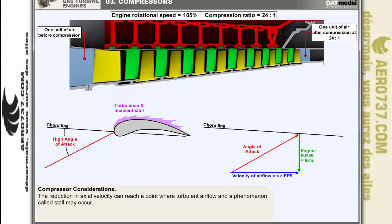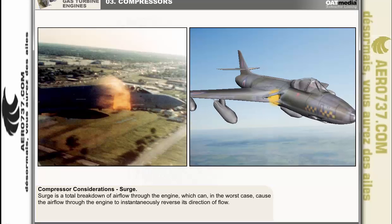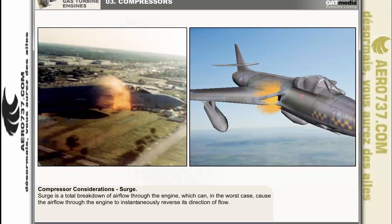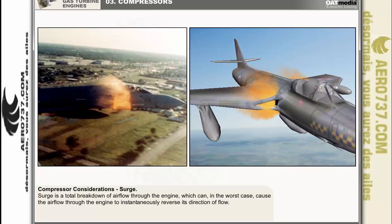The reduction in axial velocity happens throughout the compressor and can reach a point where turbulent airflow and a phenomenon called stall may occur. Stall is a partial breakdown of the airflow through the engine and is a progressive condition which, if not checked, may produce an event called surge. Surge is a total breakdown of the airflow through the engine which can in the worst case cause the airflow to instantaneously reverse its direction of flow.